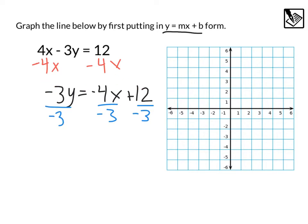Those negative 3's are going to cancel out, leaving us with y equals negative 4 over negative 3, that's going to become a positive 4 thirds x, plus 12 divided by negative 3 is just going to be a minus 4. Now that we have our equation, y equals 4 thirds x minus 4, we can graph.